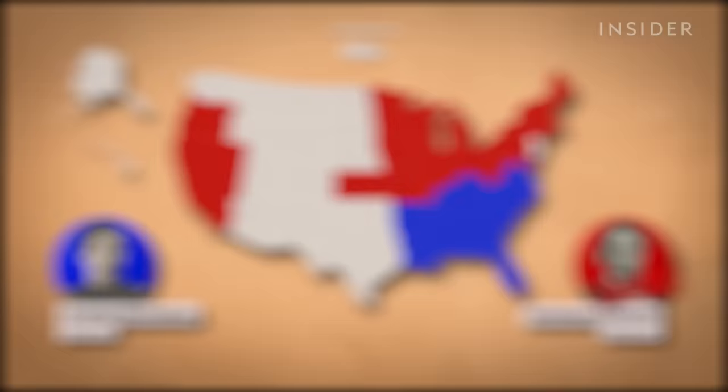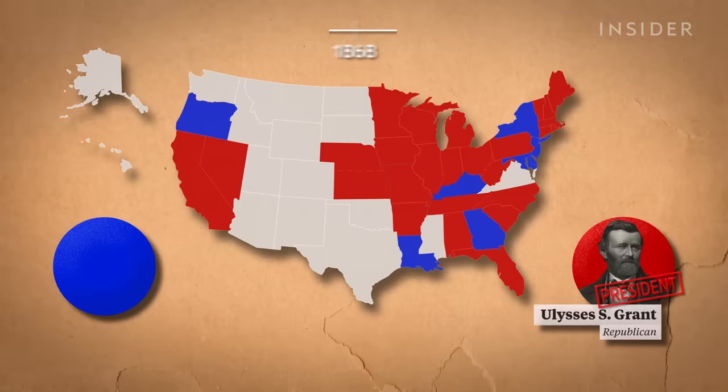A year later, the Confederacy loses and southern states begin to rejoin the Union. Lincoln is assassinated in 1865 and Vice President Andrew Johnson takes over. Republicans hang onto power when Ulysses S. Grant wins in 1868. Grant signs the 15th Amendment, giving all male citizens the right to vote, regardless of color or race, with the exception of Native Americans. Grant wins again in 1872. And the only reason Grant won a popular majority was because there were sufficient numbers of Blacks voting — in some southern states, 90% of African Americans voted.